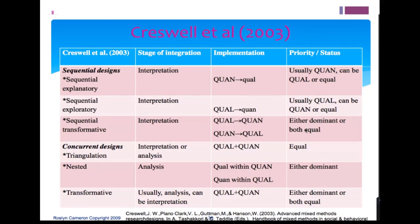Integration is important, and it's needed for a very obvious reason. When we talk about the sequential explanatory design, quant precedes qual, and priority or status can be equal or dominant. The stage of integration for sequential explanatory is at the interpretation stage. For concurrent and sequentially transformative designs, both qual and quant can be equal, and integration can occur at either the interpretation or analysis stage depending on whether you are validating or adding.